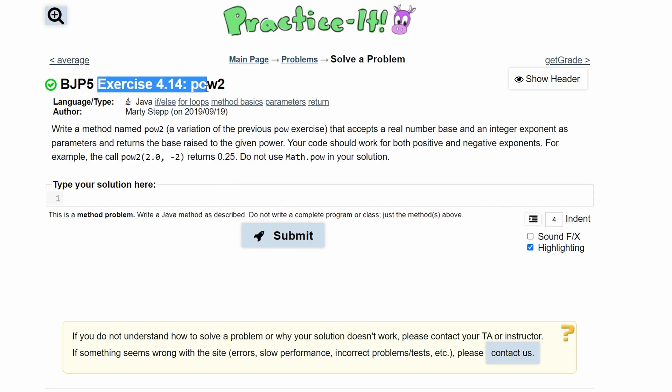In practice-it exercise 4.14 pow2, we have to write a method named pow2. So we'll have a public static void for now, pow2, parameters, and we have our header completed.